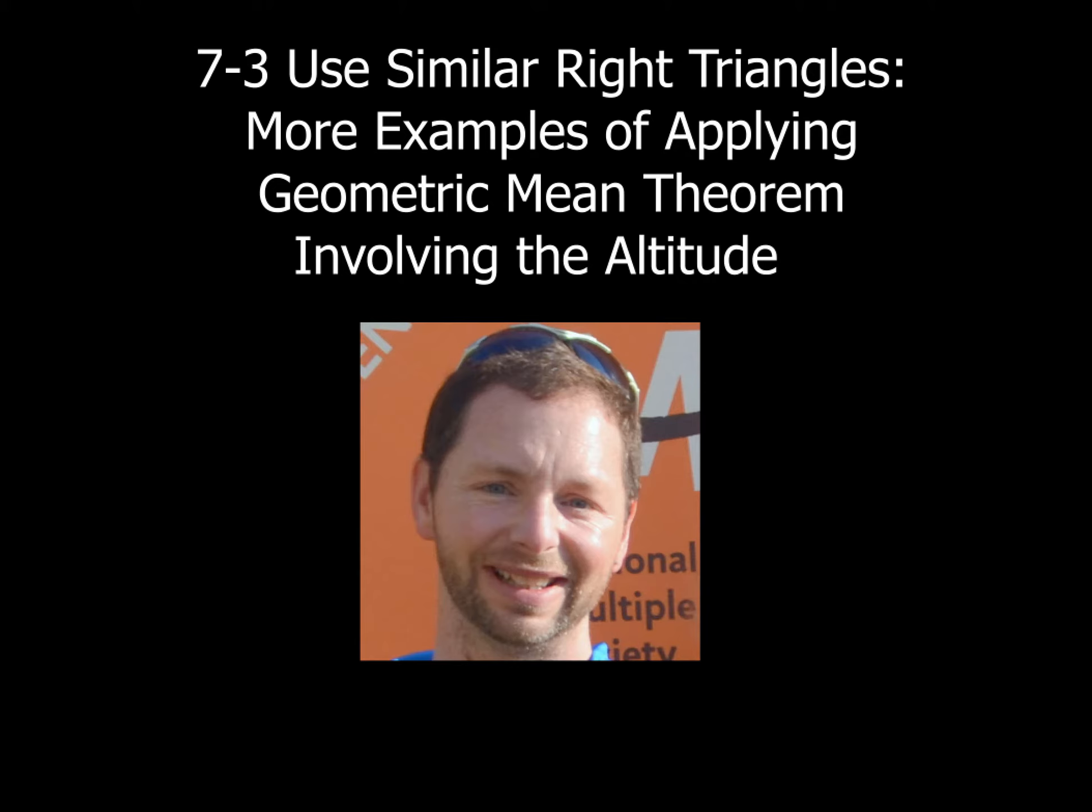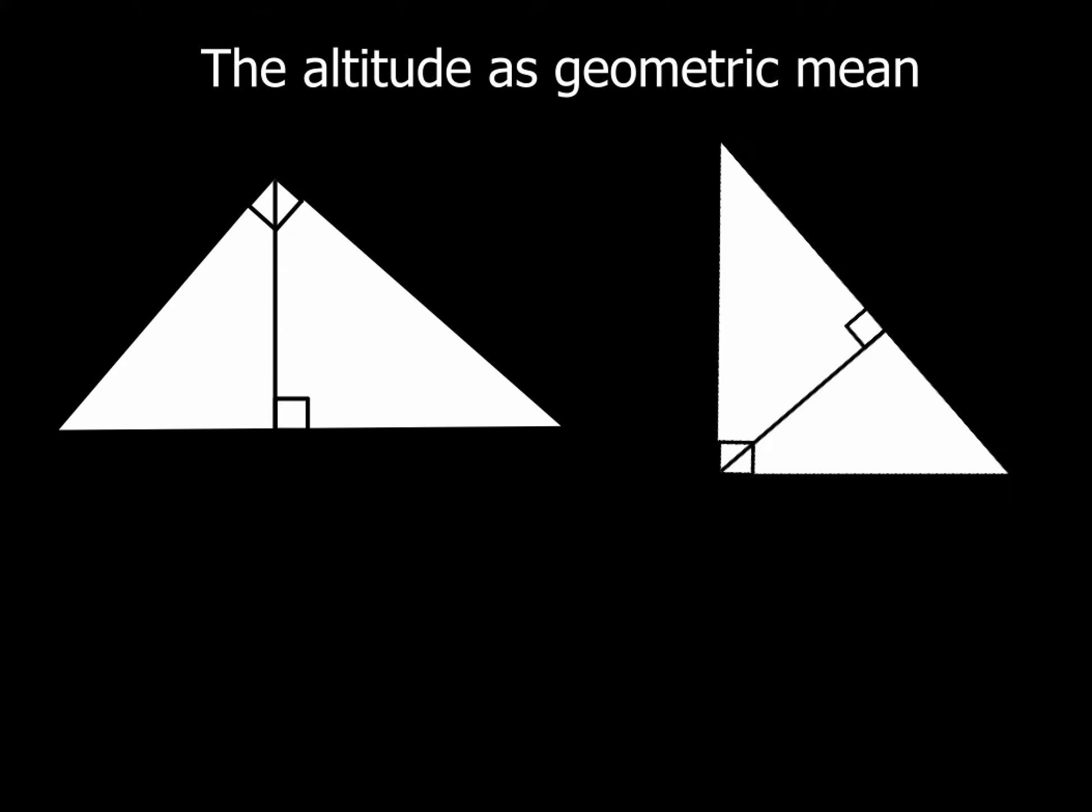So first, let's go ahead and make sure that we understand which piece is the altitude when you're given a picture for right triangles. Now check this out here. In our picture, you're going to have to be able to recognize this piece right here, or if it's flipped around, this piece right here. Both of those serve as your altitude.